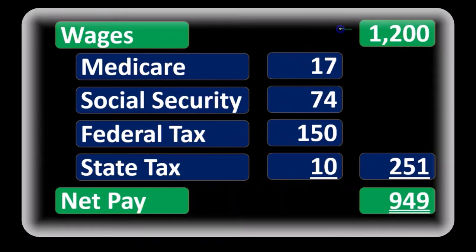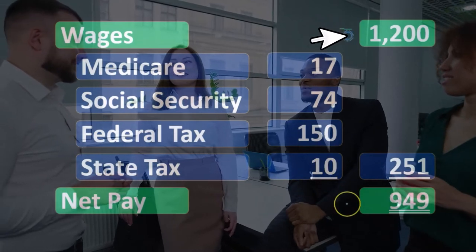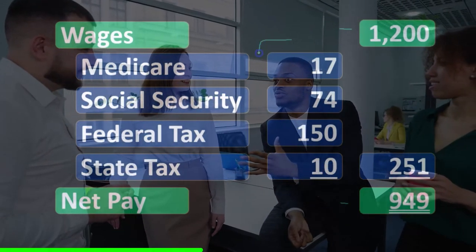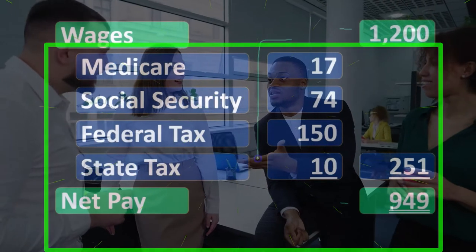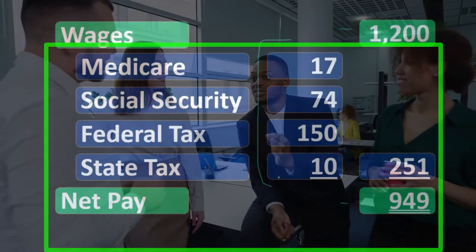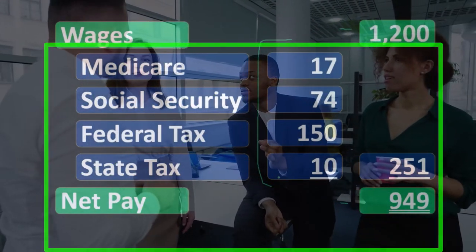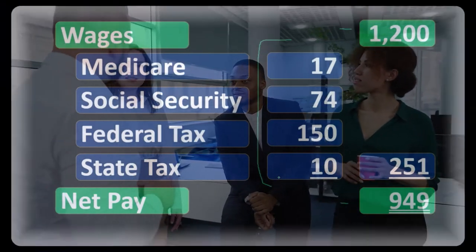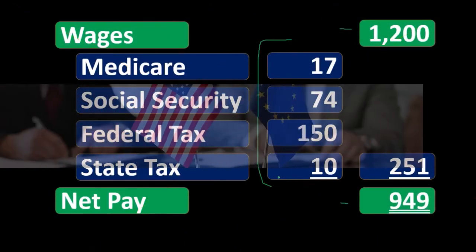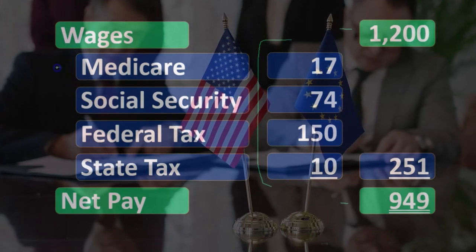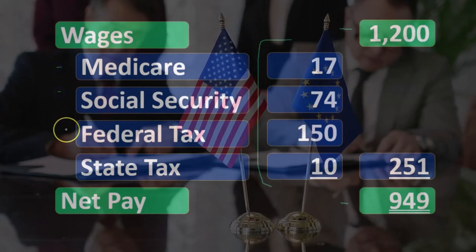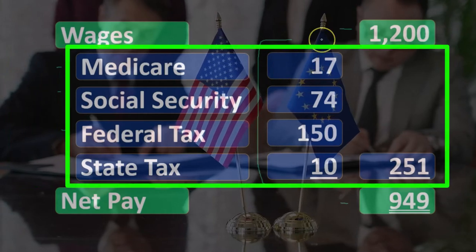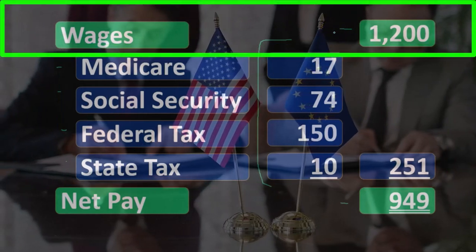This is what has been earned by the employee; this is what has been received by the employee. This has been taken away from the employee — not for the benefit of the employer, but to pay the employee obligations that are required by the government, including Social Security, Medicare, federal income tax, and state income tax owed by the employee on the amount earned, this $1,200.